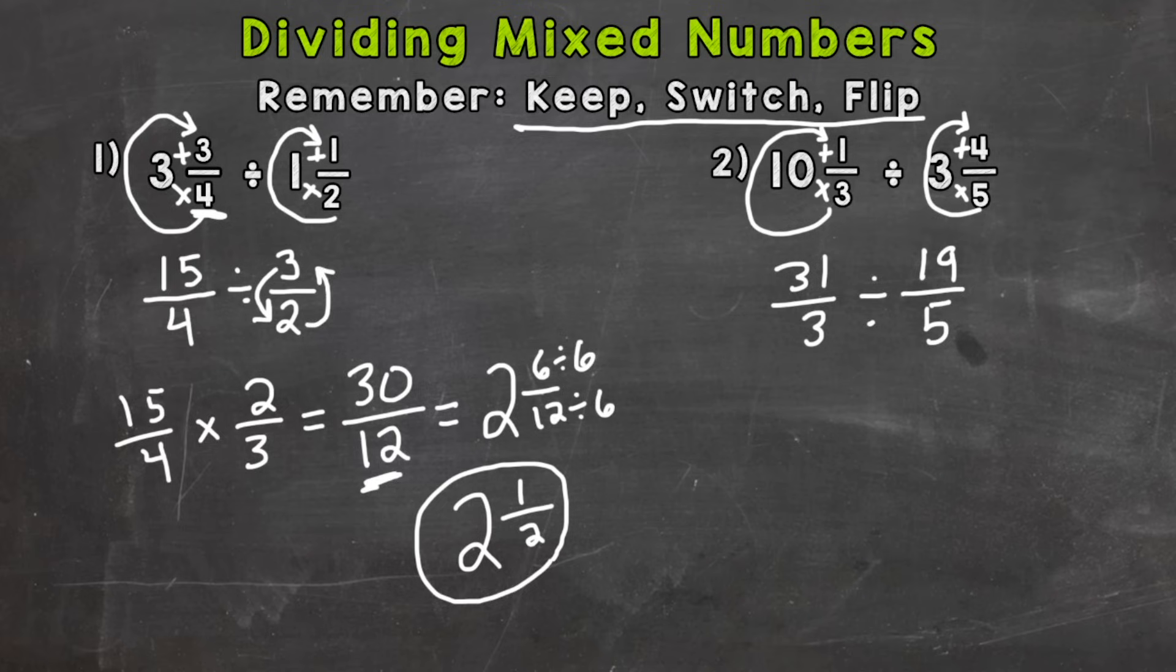Now we need to keep, switch, and flip. So 31 thirds we keep, switch to multiplication, and flip the second fraction. Now we can multiply straight across to get our final answer. So 31 times 5 is 155, and 3 times 19 is 57.